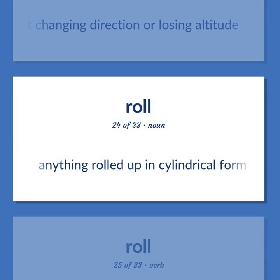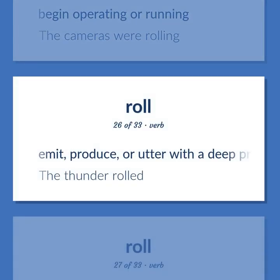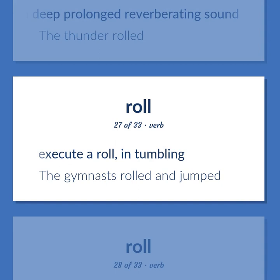A flight maneuver: aircraft rotates about its longitudinal axis without changing direction or losing altitude. Anything rolled up in cylindrical form. Begin operating or running — the cameras were rolling. Tumbling; emit, produce, or utter with a deep prolonged reverberating sound — the thunder rolled. Execute a roll, in tumbling — the gymnasts rolled and jumped.